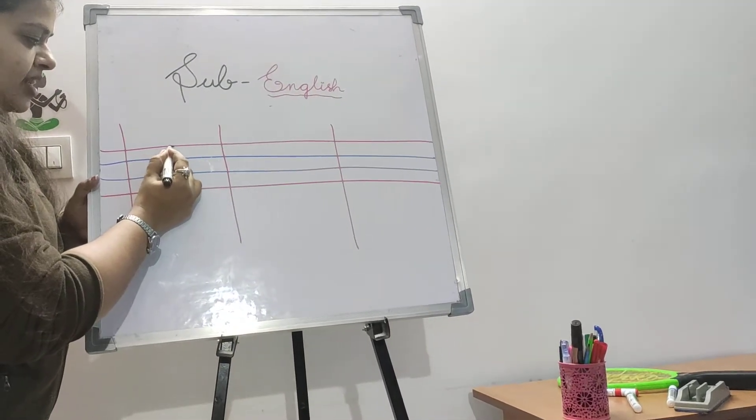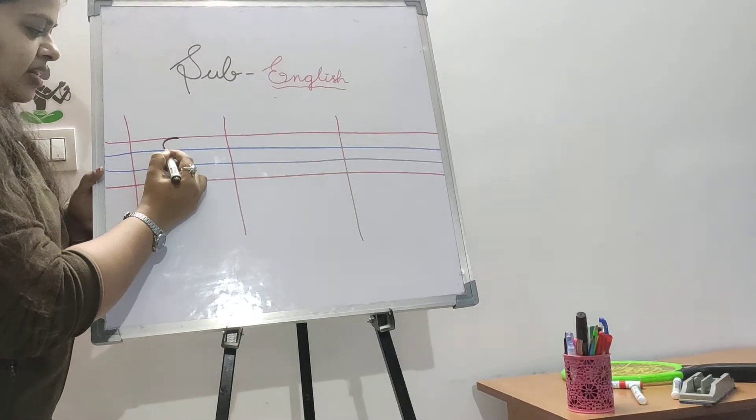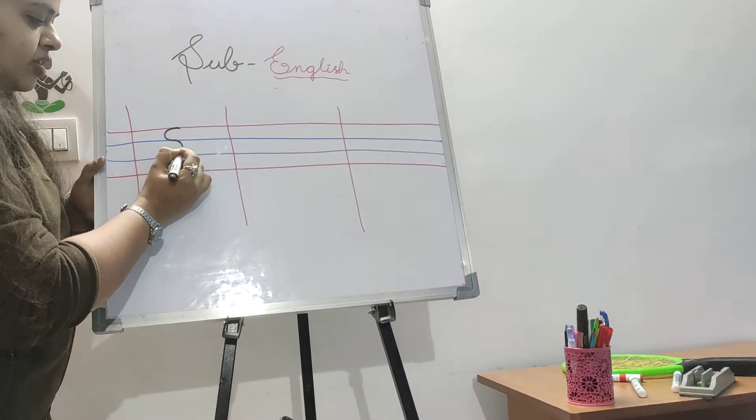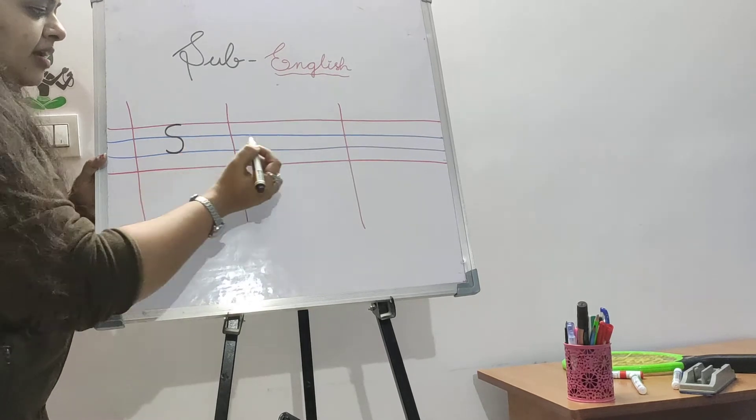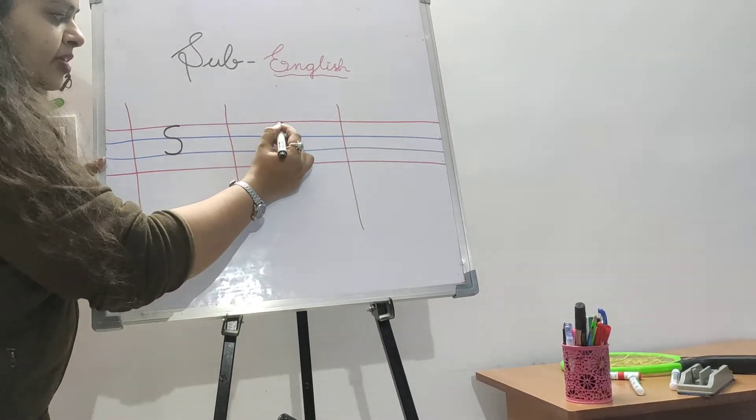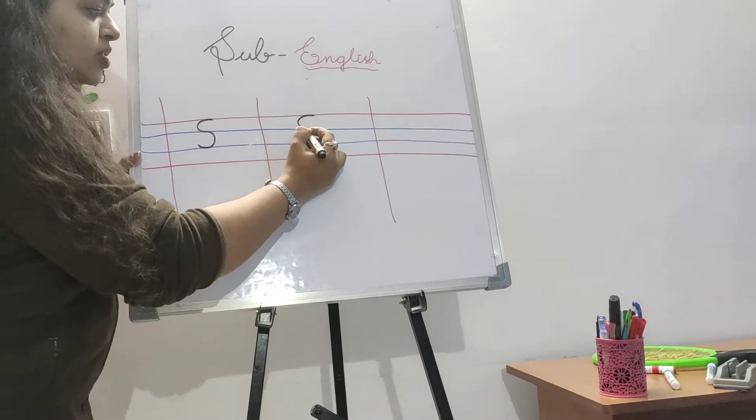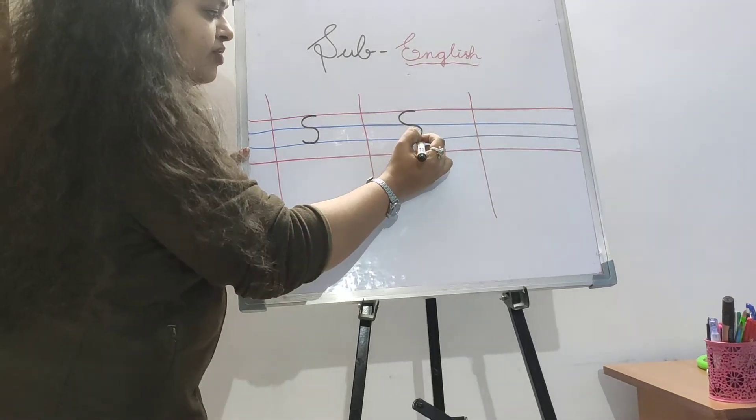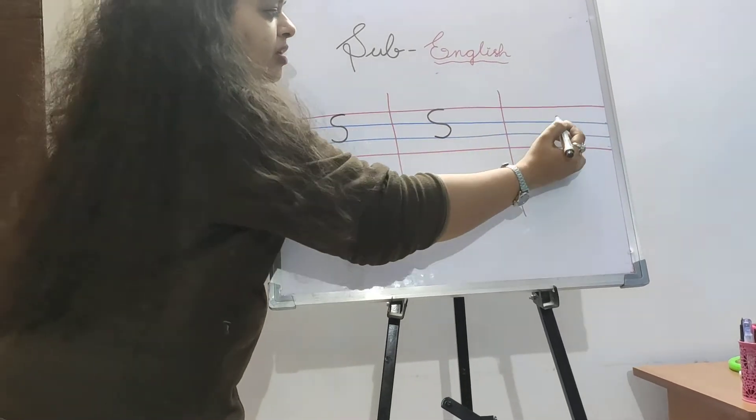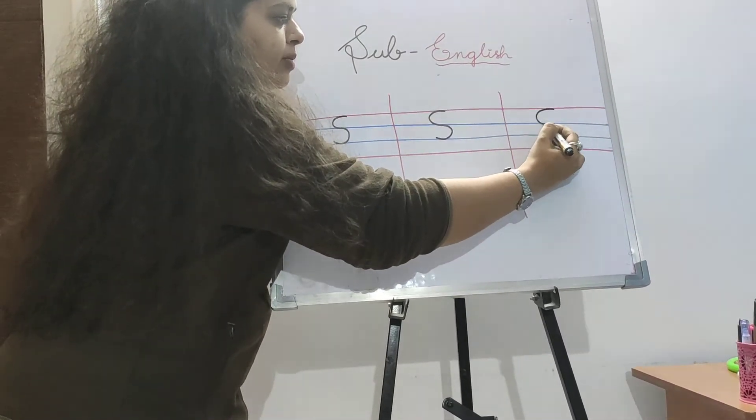From the top red line to the top blue line, write the right curve and come back with the left curve to the bottom blue line. Once again, right curve from the top red line to the top blue line and the left curve from the top blue line to the bottom blue line.